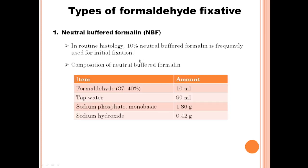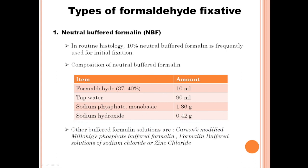Neutral buffered formalin is composed of a 10% solution of phosphate-buffered formaldehyde. Formaldehyde is commercially supplied as a 37 to 40% solution. Other buffered formalin solutions are also available, including Carson's modified Millonig's phosphate-buffered formalin, and formalin-buffered solutions of sodium chloride or zinc chloride.